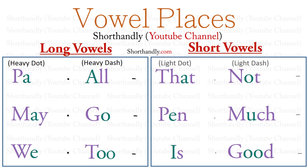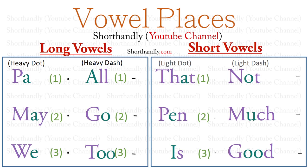Our very first vowel is PA, and PA will be on the first place. MAY will be on the second place. WE will be on the third place. ALL will be on the first place. GO will be on the second place. TO will be on the third place. THAT will be on the first place. PEN will be on the second place. IS will be on the third place. NOT will be on the first place. MUCH will be on the second place. GOOD will be on the third place.